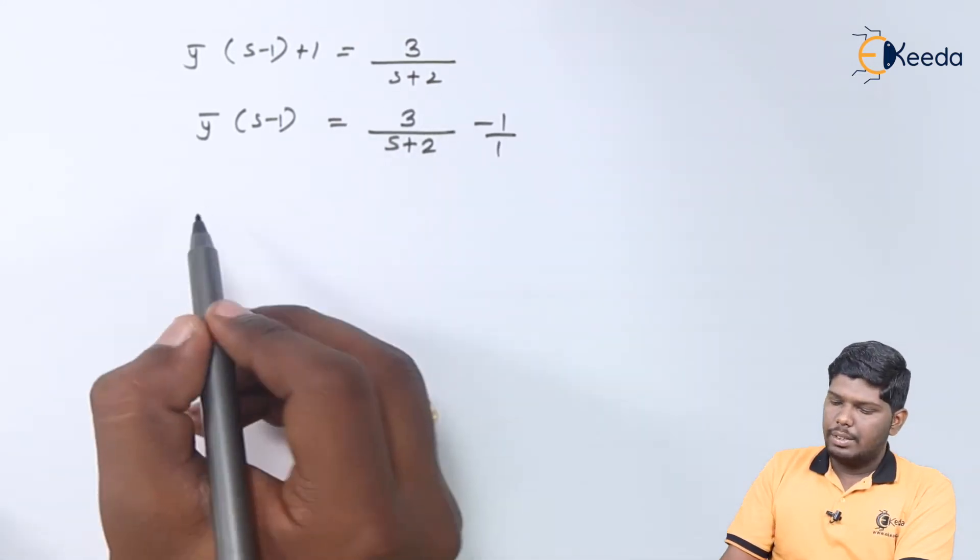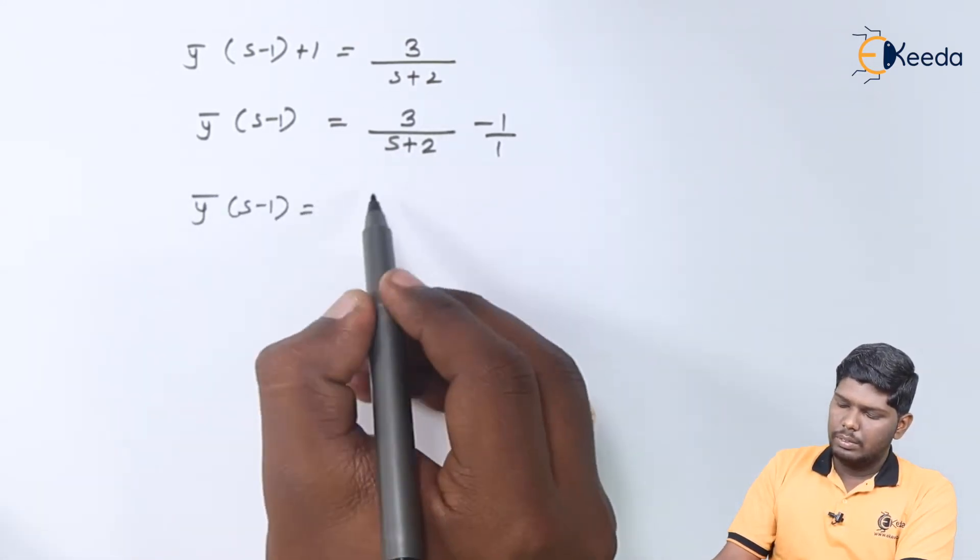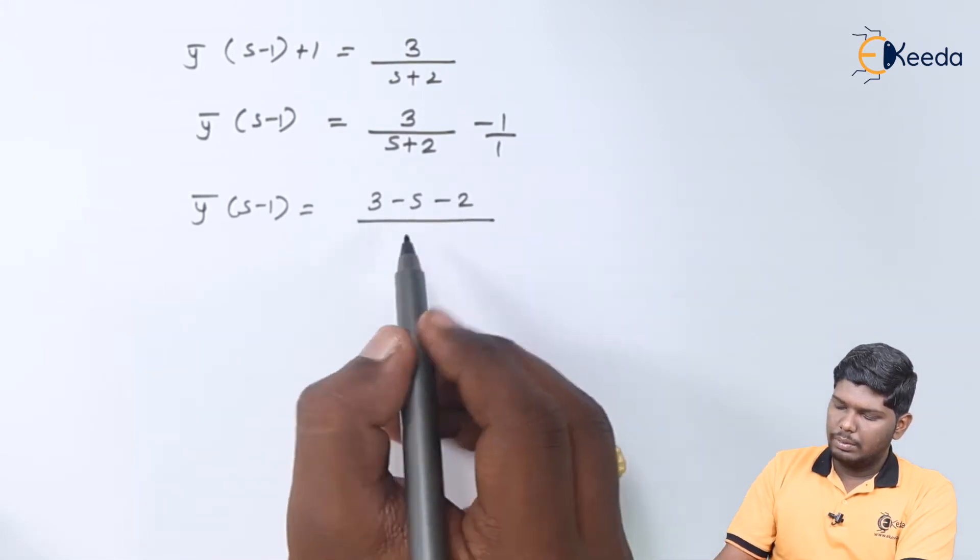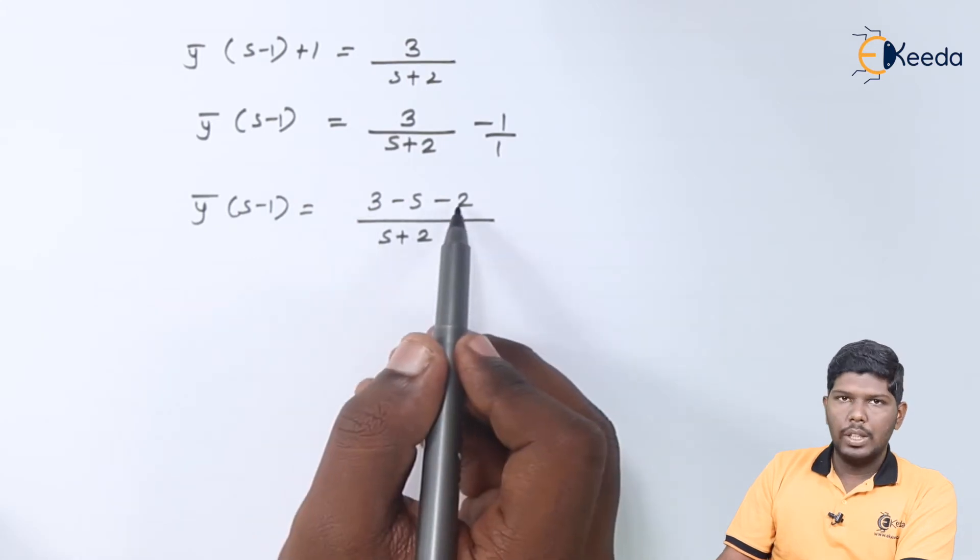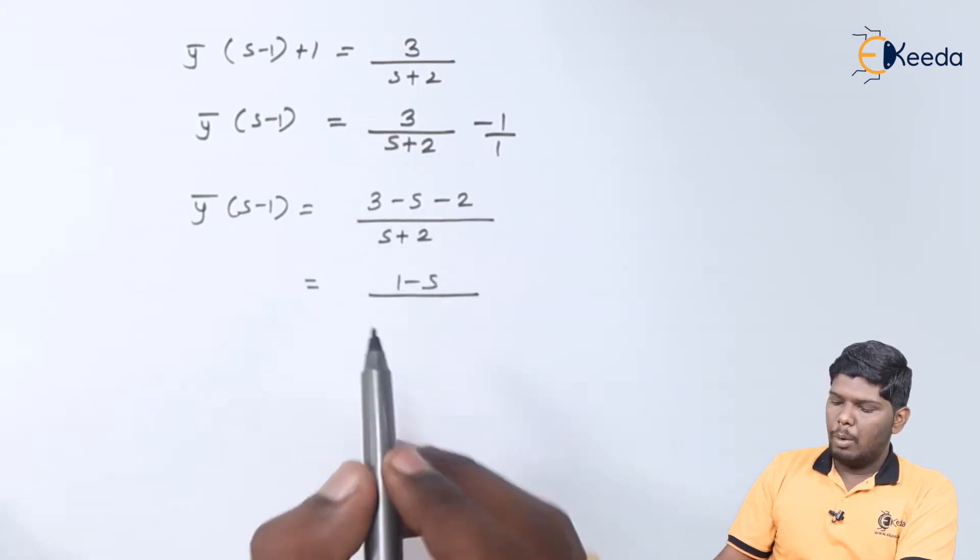Now let us solve these two fractions. So we have 3 minus s minus 2, that will give you 3 minus s minus 2, and we have 1 minus s upon s plus 2.